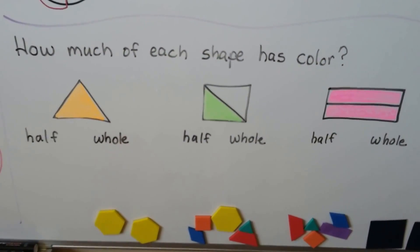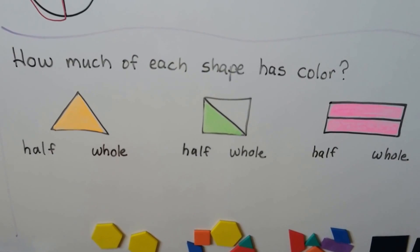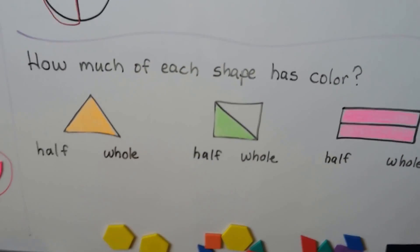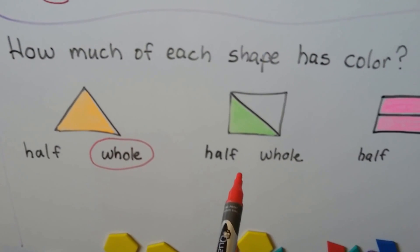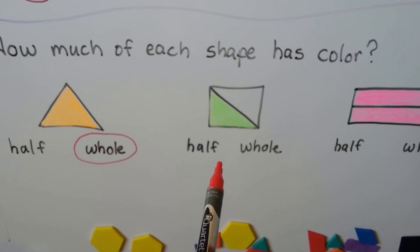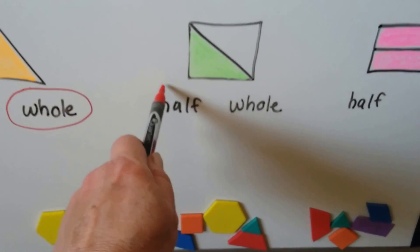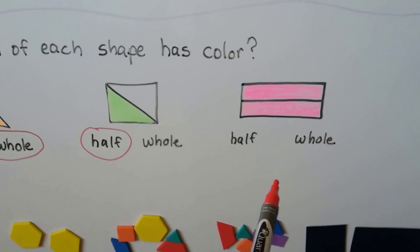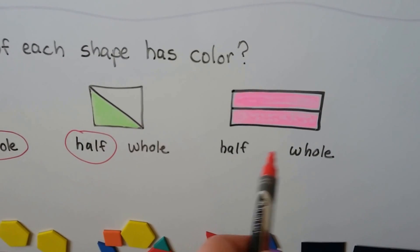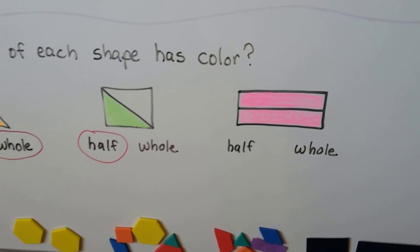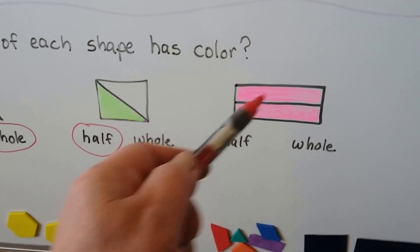How much of each shape has color? How much of this triangle has color — half of it, or the whole shape? If you said the whole shape, you're right, because the whole thing is colored in. How much of this square has color — half of it or the whole shape? Only this part is colored green, so that would be half of it. Here's a tricky one: how much of this shape has color — half of the shape, or the whole shape? If you said the whole shape, you're right. It's cut in half, but both of them have color, so the whole thing has color.